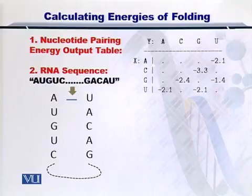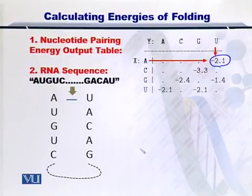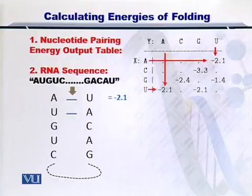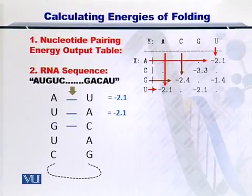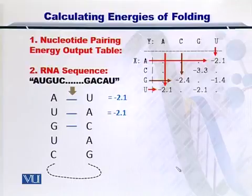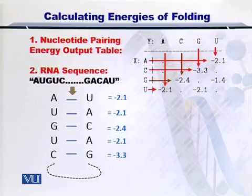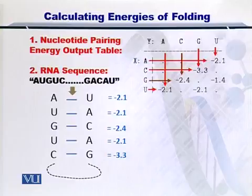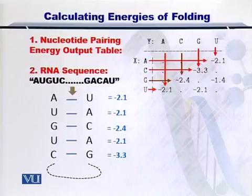If A and U form a bond, from the table you can see that minus 2.1 kcal will be given out. Continuing on, if U and A were to bond, the energy given out will be minus 2.1 kcal as well. If G and C bond, you can look up from the table and minus 2.4 kcal will be given out. You can keep writing each one of them against the bonds that are formed, and at the end you can see the values for the energies given out as a result of the bond formation between each complementary nucleotide.